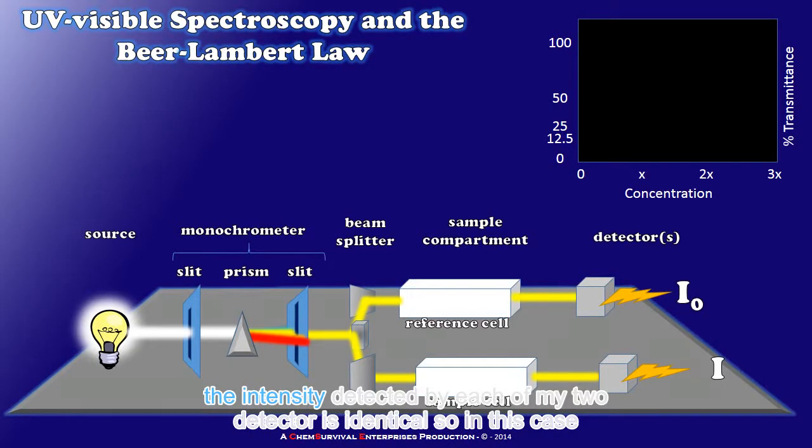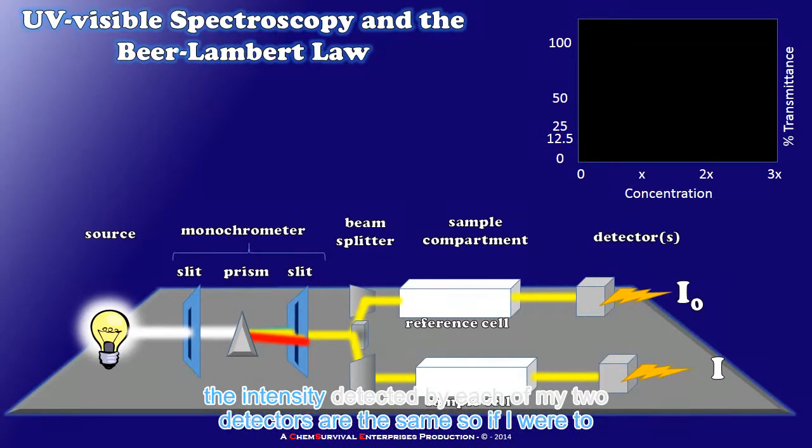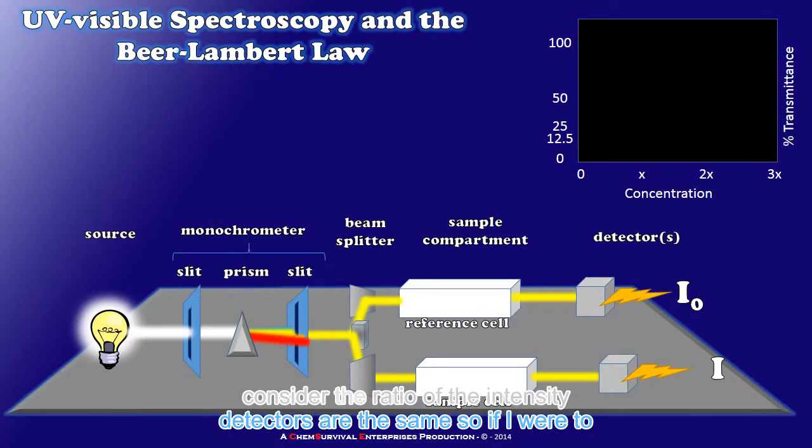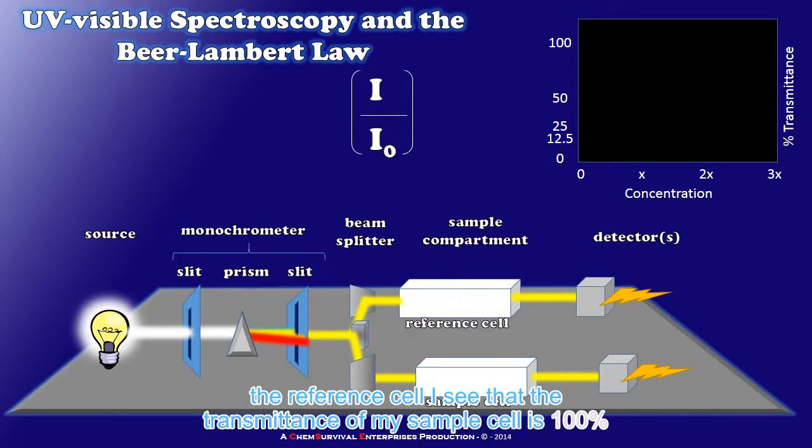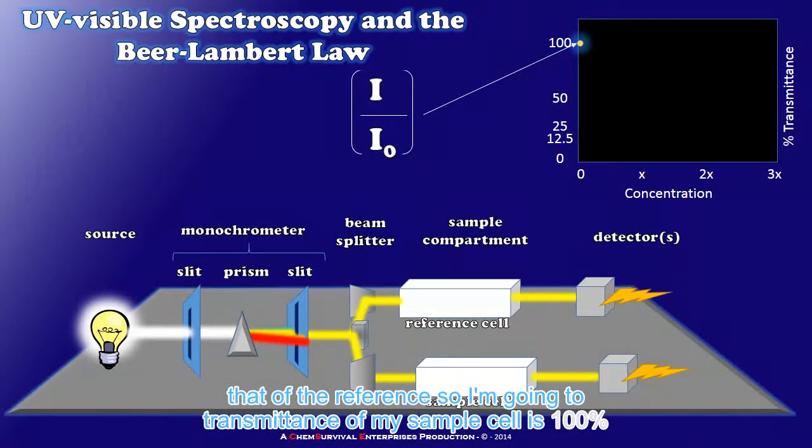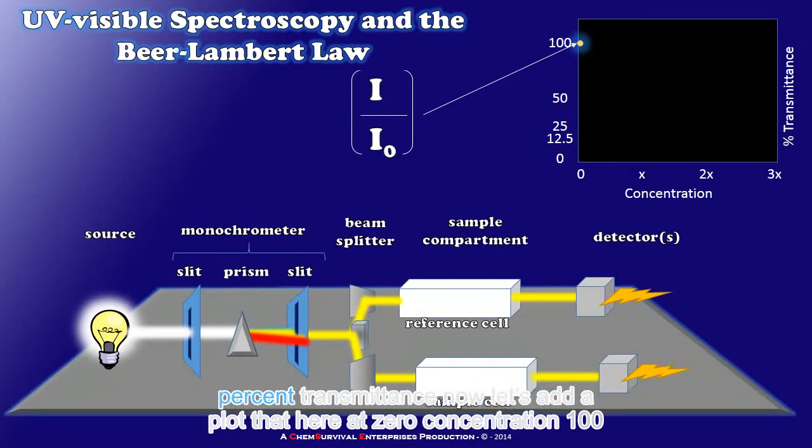So in this case the intensity detected by each of my two detectors are the same. If I were to consider the ratio of the intensity leaving the sample cell to that leaving the reference cell I see that the transmittance of my sample cell is one hundred percent that of the reference. So I'm going to plot that here at zero concentration 100% transmittance.